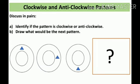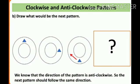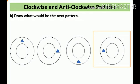This is for your practice — you can discuss with your parents. The question is: identify the pattern as clockwise or anticlockwise, and the second part is draw what would be the next pattern. You can see here the black dot is moving in the direction of the hands of the clock, so this pattern is clockwise. The next pattern will be like this.